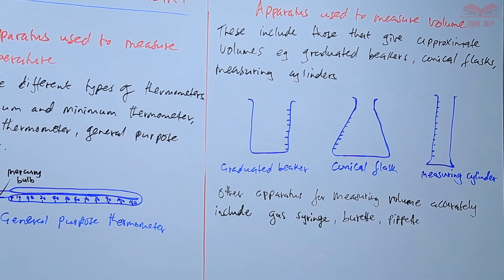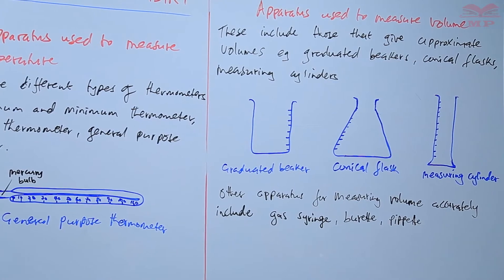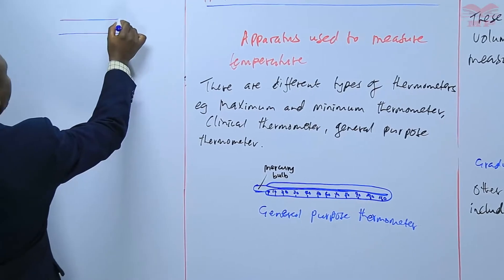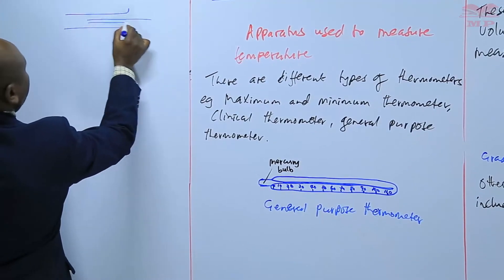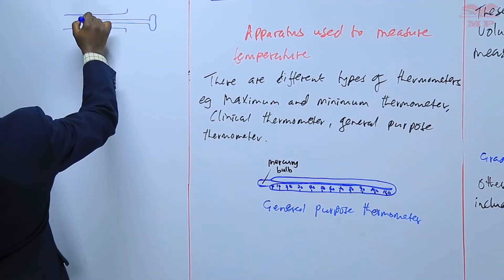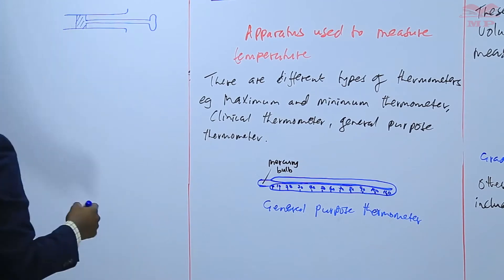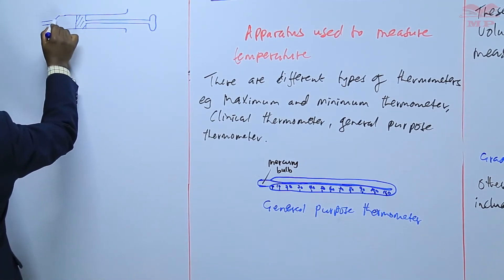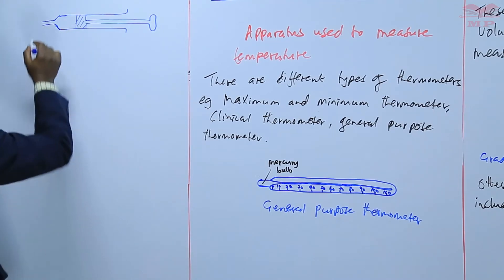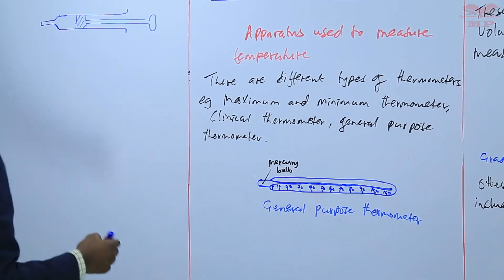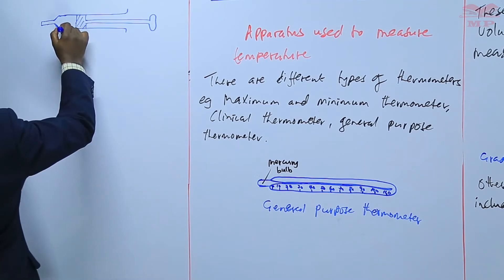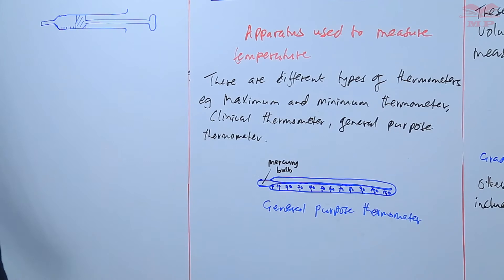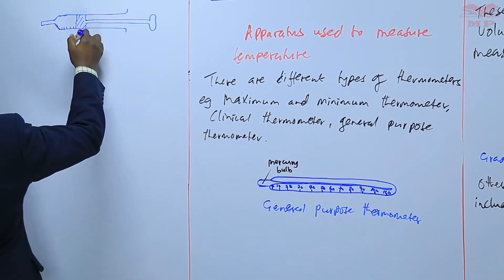We are going to have a diagram of each. We have the syringe, which also has calibrations for measuring different volumes.